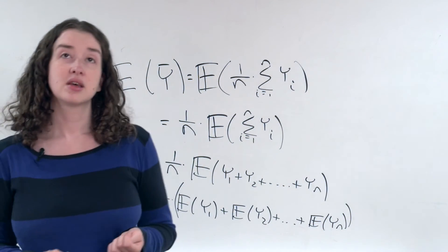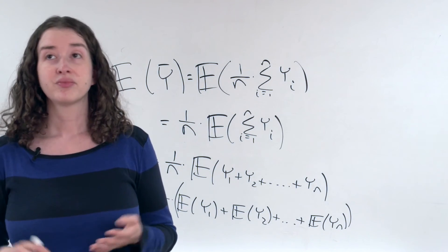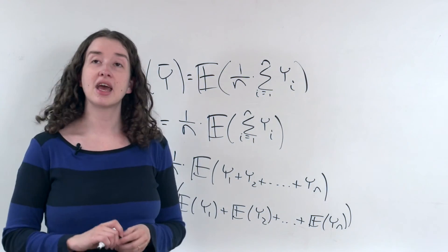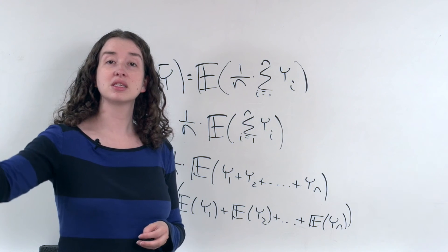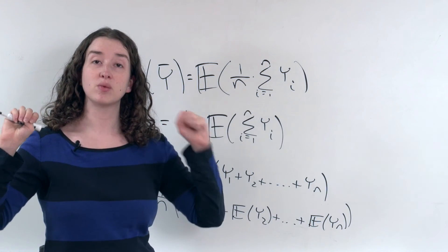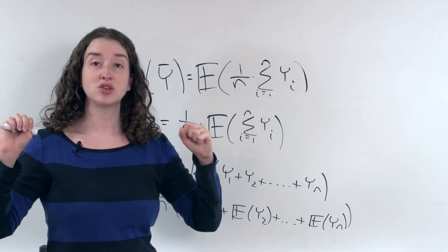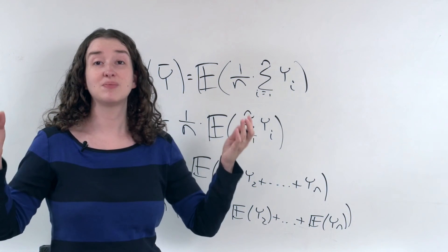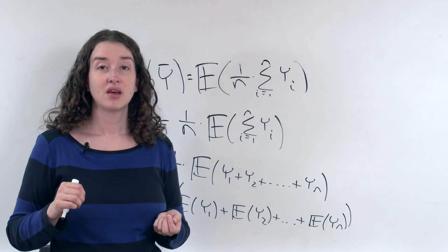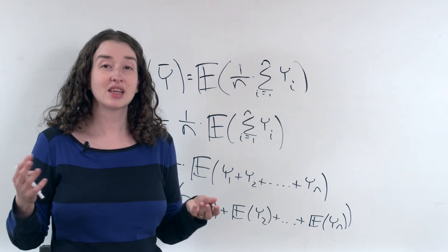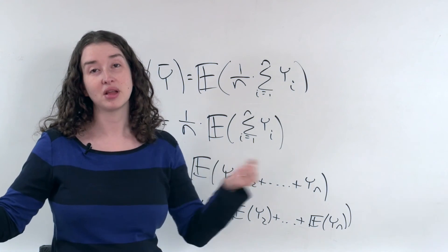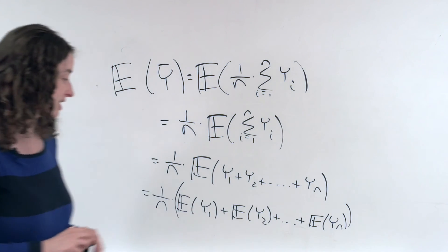In other words, if I'm interested in the expected value I'd get if I randomly sample a man and write down his height and randomly sample a woman and write down her height, the quantity I'd get is the same as the mean height for men plus the mean height for women. That's what this says.